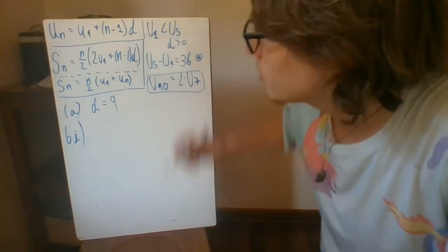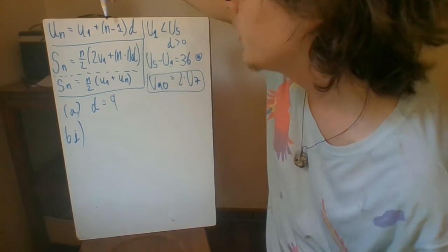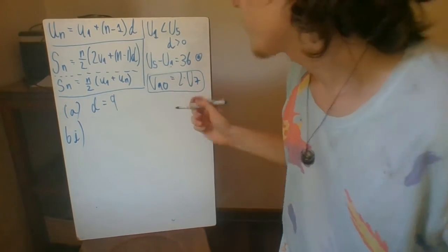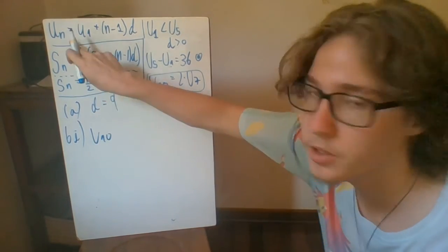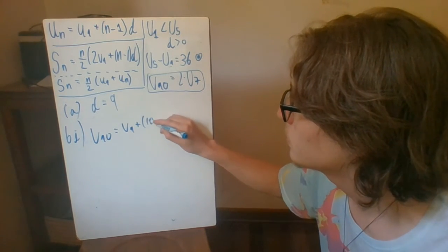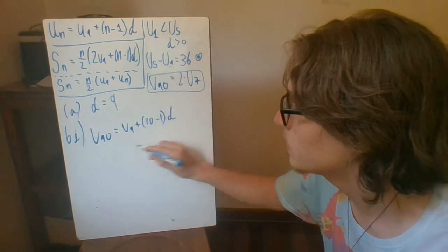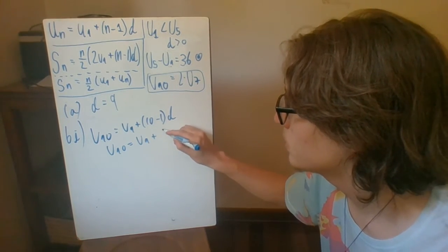So conveniently, in the first formula, it is composed of u1 and d. And well, n, but we have the value of n. And so if we plug in u10 for this formula here, the first one, we end up with u1 plus 10 minus 1 times d. This simplifies to u1 plus 9d.